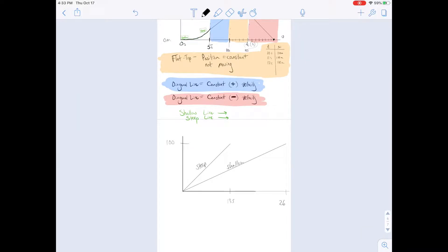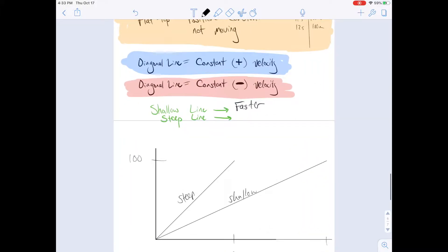The steep line corresponds to the faster pace. Steep, let's get that correct. The steep line corresponds to faster, and the shallow line corresponds to slower.